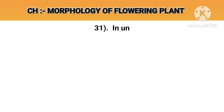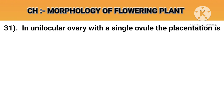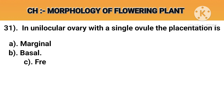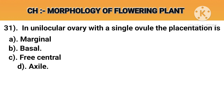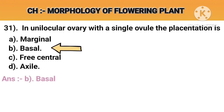Question number 31. In a unilocular ovary with a single ovule, the placentation is. Option A: Marginal. Option B: Basal. Option C: Free central. Option D: Axile. Answer B: Basal.